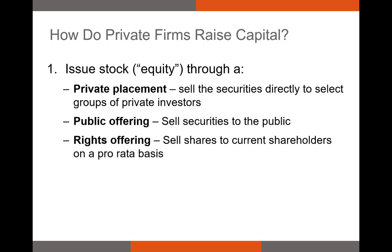The next way a firm can raise capital is via a public offering. If this is the first time the firm has issued shares to the public, this is called an initial public offering or IPO. If the firm's shares are already trading on a public stock exchange but the firm wants to issue new shares, this is called a secondary equity offering or SEO. Firms can also do a rights offering, where current shareholders can buy shares proportionate to their current ownership. For example, if Berkshire Hathaway owns 5% of Coca-Cola's shares and Coca-Cola wants to raise $100 million via a rights offering, Berkshire Hathaway could purchase up to 5%, or $5 million worth, of the firm's new shares.